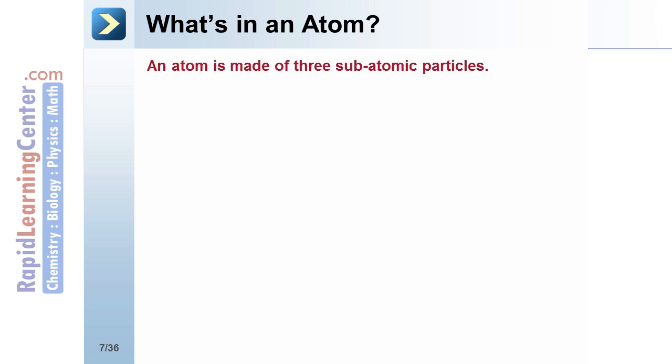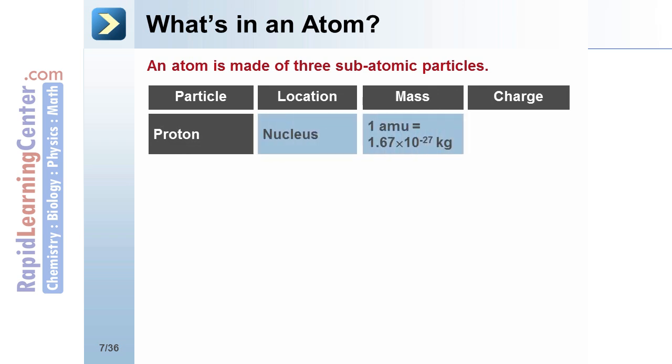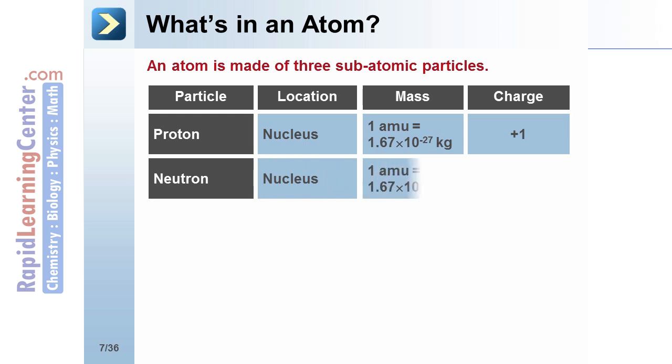What is an atom? Atoms contain three subatomic particles. Protons are located in the nucleus, have a mass of 1 amu, and a charge of plus 1.